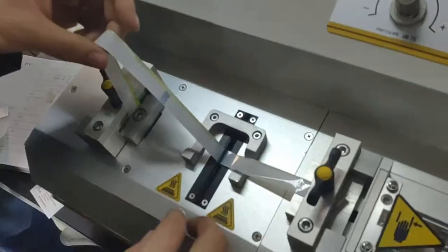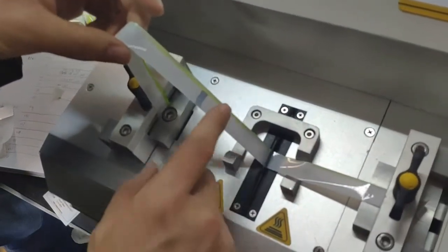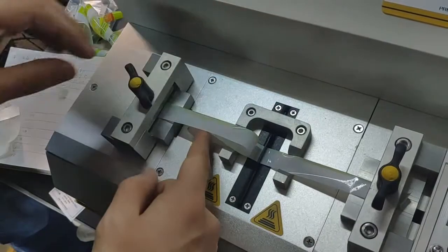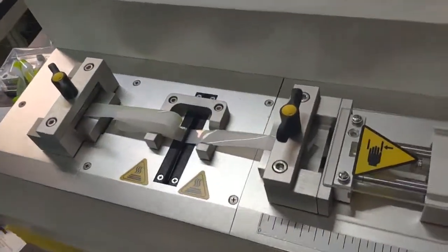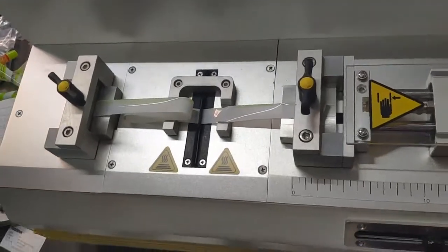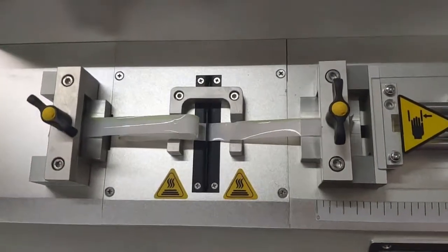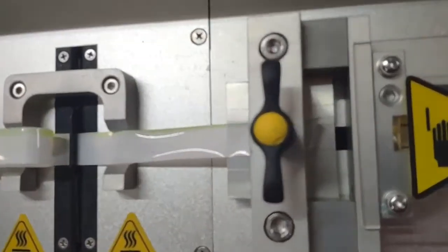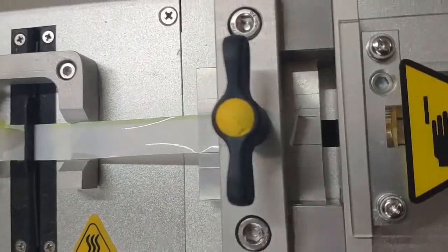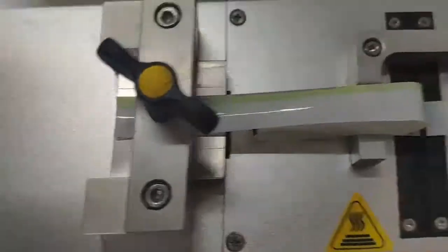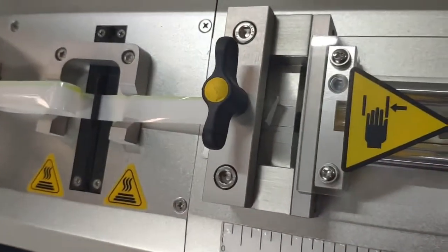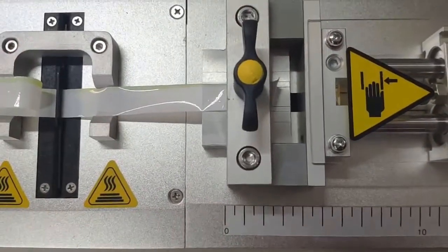And clamp them. Now we finish the sample installation. But there is another point you have to know. We need to make sure the two ends of the sample are positioned on the left and right jaws.